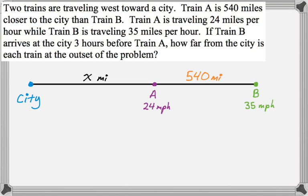So I usually like to go with the one that gets there first and call that T. So train B arrives three hours before train A. So train B gets there first. So I'm going to say that that takes T hours. So it arrives at time T. And if that arrives at time T, then that means that A arrives three hours later. So it's going to arrive at just T plus 3.